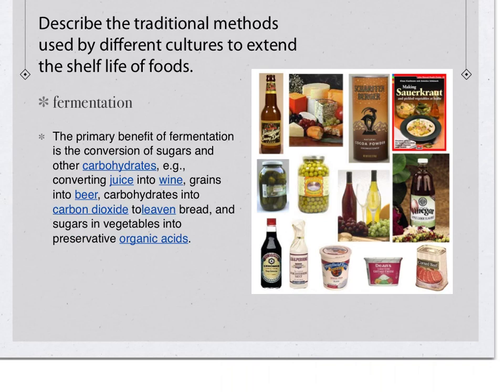Traditional methods also extend shelf life. Fermentation involves taking sugars in foods — like juices or grains — and converting them into alcohols, which have a longer shelf life. This allows the food energy stored in sugars and grains to be preserved in a more stable compound that lasts longer.